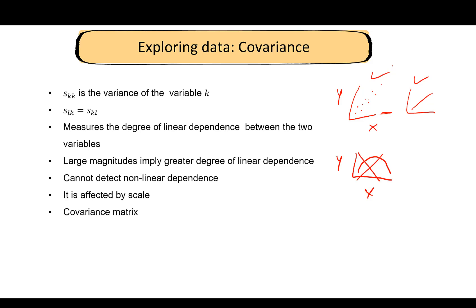All covariances between each pair of variables can be arranged into a covariance matrix, typically denoted S. Note that the population covariance is denoted by Σ, whereas this sample covariance is denoted S. s_1² is the variance of the first variable, s_p² is the variance of the pth variable, s_1p is the covariance between the first and pth variable, and s_p1 equals s_1p. Therefore this covariance matrix is symmetric.